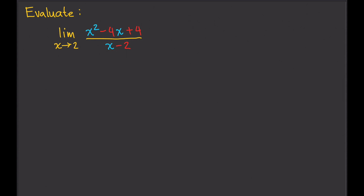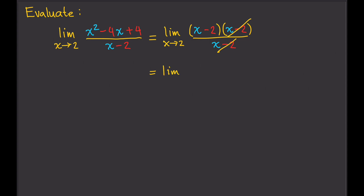So, then what do we do? Well, we can try to factor the numerator. That gives us x minus 2 and x minus 2. And our denominator is x minus 2. So we can cancel out one (x minus 2) from the numerator and denominator, leaving us with the limit as x approaches 2 of x minus 2.